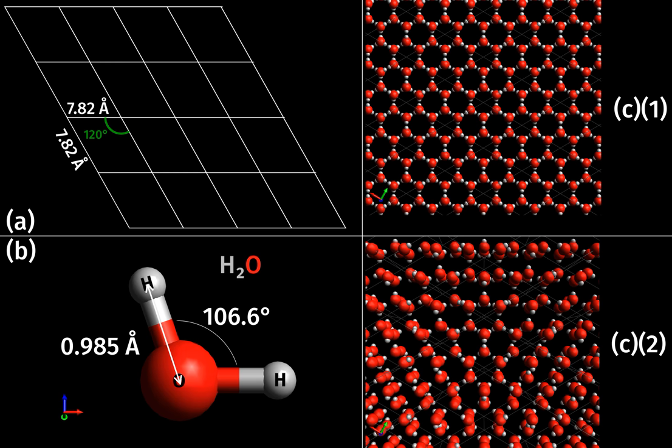Bravais lattices, also referred to as space lattices, describe the geometric arrangement of the lattice points, and therefore the translational symmetry of the crystal. The three dimensions of space afford 14 distinct Bravais lattices describing the translational symmetry. All crystalline materials recognized today, not including quasi-crystals, fit in one of these arrangements.